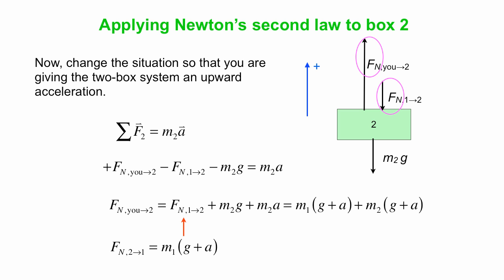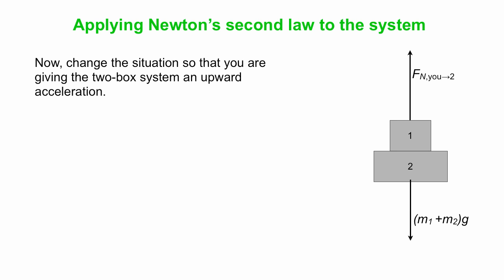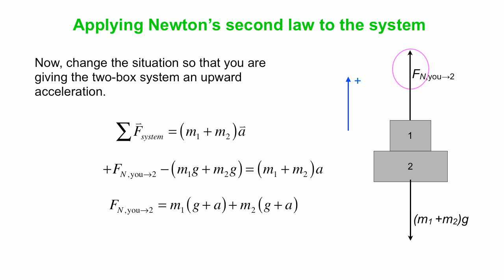Okay. So Fn you on two is M1 times g plus a plus M2 times g plus a. Again, if you put in g, we'll put it in with a positive sign. Do we get the same thing if we use that free body diagram? Let's have a look. We should. Again, that force would be different than it was with no acceleration. Up is positive. Fn you on two positive minus M1g plus M2g is M1 plus M2 times a. Rearrange. You get exactly what we got on the previous screen, which we should.